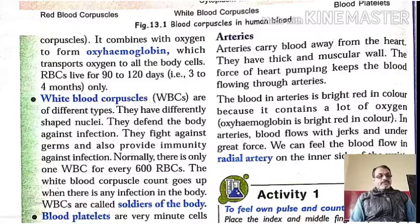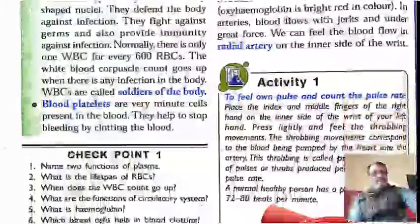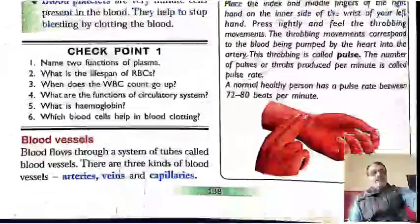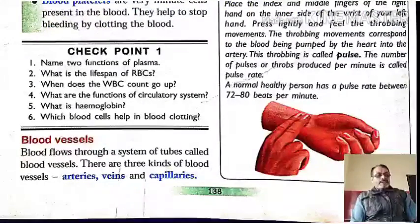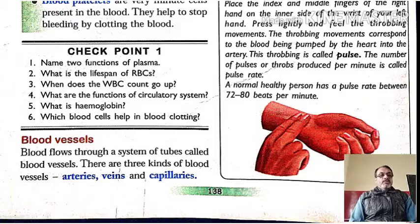We can feel the blood flow in radial arteries on the inner side of the wrist. This throbbing movement that can be felt on our wrist is called pulse.